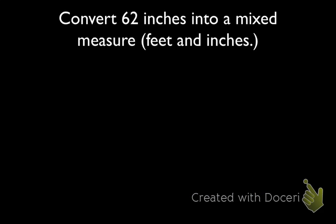So now let's work on this question. We're seeing that we want to convert 62 inches into a mixed measure. Usually when we convert to a mixed measure, we're going to move up just one in terms of size. The smallest measure that we have in the customary unit is inches, then feet, then yards, then miles in terms of relative size.